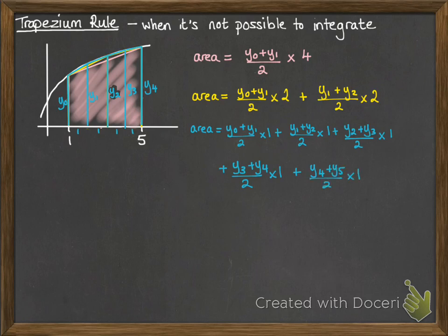Now you'll notice in that last one in particular that you get repeats of some of those values. For example, we've got y1 in the first trapezium and the second one needed to calculate that area. We've got y2 needed for two of the trapezium, where there's a shared side. So we can simplify this formula a little bit.